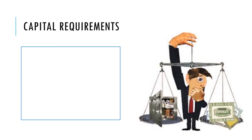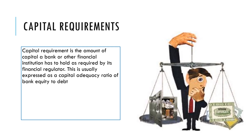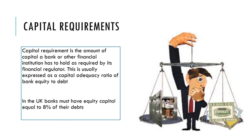Those requirements are called capital requirements, and these apply to the UK and also to some other countries. The capital requirement is the amount of capital a bank or other financial institution has to hold as required by its financial regulator. This can also include not just depositors' money but also the shareholders' capital within the bank itself, so the owners of the bank can also use their capital to meet this requirement. For example, UK banks must have equity — shareholders' funds within the business — equal to 8% of all the debts they've loaned out.